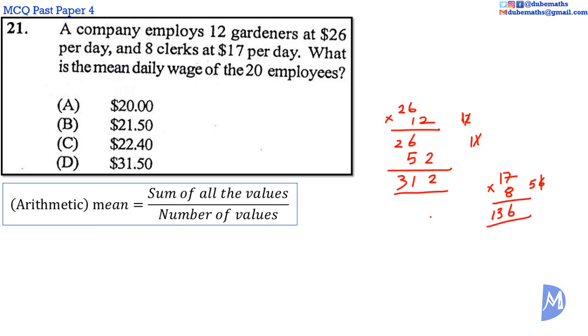Now we add 312 to 136, we get 448. The arithmetic mean is equal to the sum of all the values.